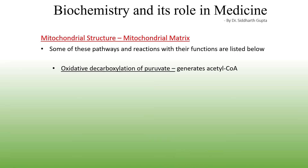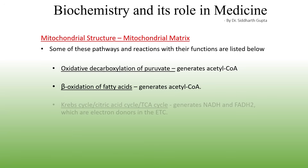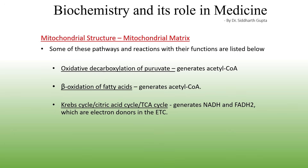Metabolic pathways occurring in the mitochondrial matrix include the oxidative decarboxylation of pyruvate and the beta-oxidation of fatty acids, both of which generate acetyl-CoA — a substrate of the Krebs cycle. The Krebs cycle, also known as the citric acid cycle or TCA cycle, is among the most important metabolic pathways in biochemistry. It generates NADH and FADH2, which donate electrons to the electron transport chain and initiate the redox reactions of oxidative phosphorylation.